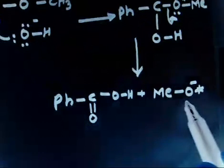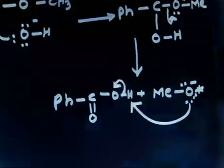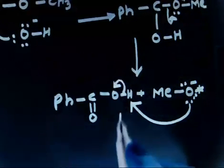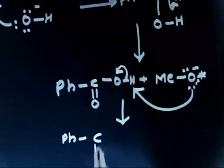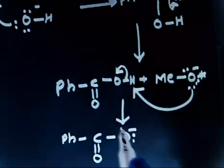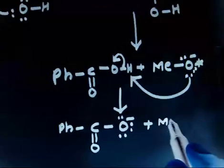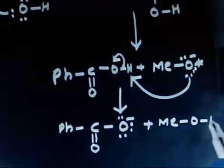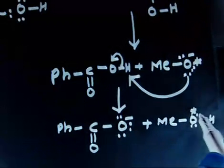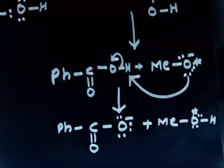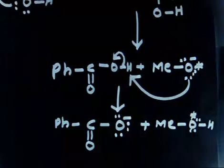So this MeO⁻ takes H⁺ and forms MeO*H, and following this step you will get PhC(=O)O⁻ — the carboxylate salt — plus MeO*H. So the labeled oxygen goes to the alcohol. The labeled oxygen ends up in the alcohol product.